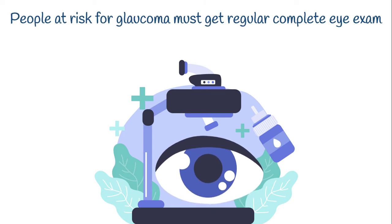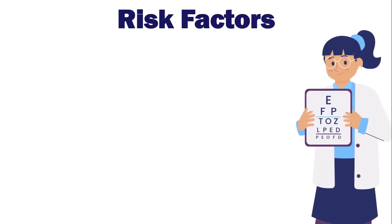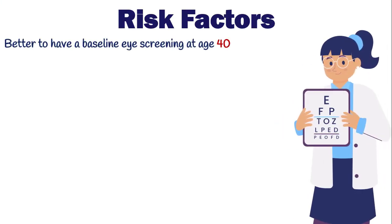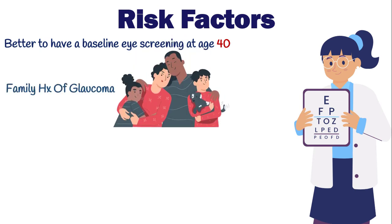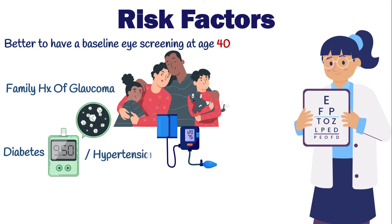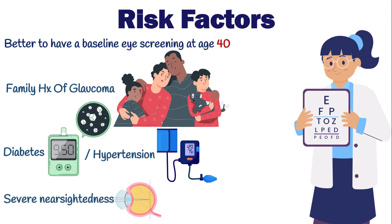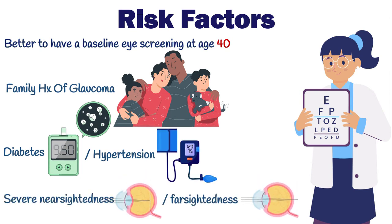Because of this, people at risk for glaucoma must get regular complete eye exams as a screening test. Generally, it's better to have a baseline eye screening at age 40, since signs of glaucoma and optic nerve damage may start to appear at this age. Besides family history of glaucoma, certain medical conditions such as diabetes, hypertension, severe nearsightedness, or farsightedness can put you at risk of glaucoma.